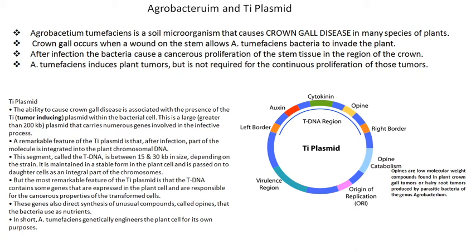Opine is a quite essential gene product for the production of tumor-inducing chemicals. Once the opine genes are activated, the bacteria containing this Ti plasmid can induce gall or tumor in the plants. These genes present in the T-DNA region also direct synthesis of unusual compounds called opines. These opines are useful for bacteria as a nutrient — bacteria can take opines as nutrition — but for the plant, these opines can induce tumor.